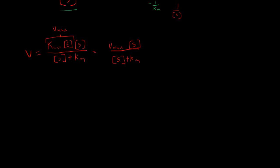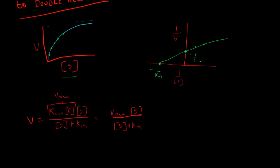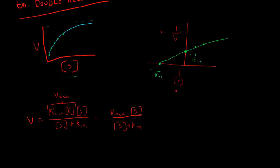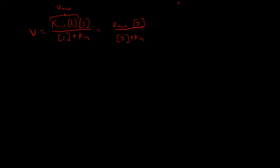So in order to get the format for a double reciprocal plot, we're going to want to take the reciprocal of our x and our y. So if we take the reciprocal of this equation, we can take one over velocity equals concentration of substrate plus Km over Vmax times concentration of substrate.